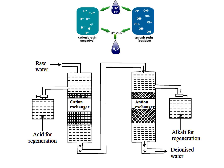Hard water contains calcium salts, magnesium salts, and anions like Cl⁻ and SO₄²⁻. In the process, Ca²⁺ or Mg²⁺ ions are captured by the cation exchange resin while H⁺ ions are released, and negative ions like Cl⁻ and SO₄²⁻ are captured by the anion exchange resin while OH⁻ ions are released. The process uses two vertical tanks — the first tank contains the cation exchange resin (RH), which holds H⁺ ions on its surface.